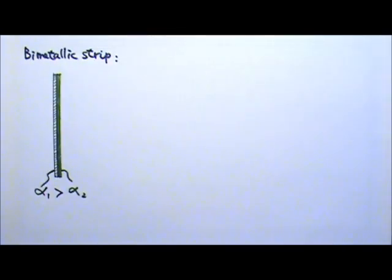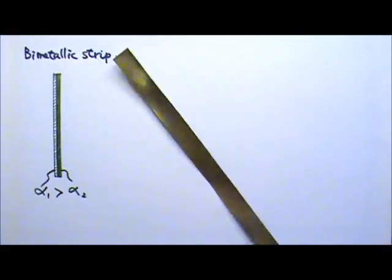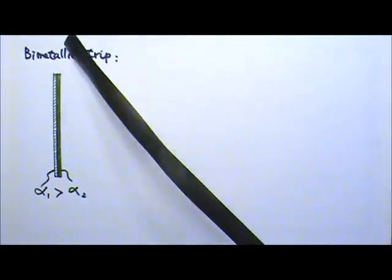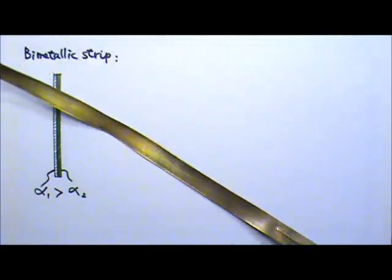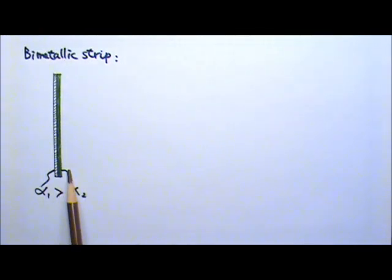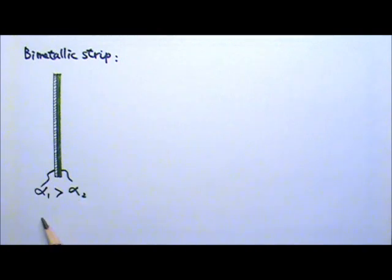Now let's take a look at this thing called bimetallic strip. It is a strip like this one. It is made of two different metals, one on each side. I hope you can see that the colors are different on the two sides. Like in this figure, the two different metals have different coefficient of linear expansion alpha. Let's say alpha one is bigger than alpha two. What do you think will happen when I heat a bimetallic strip up?